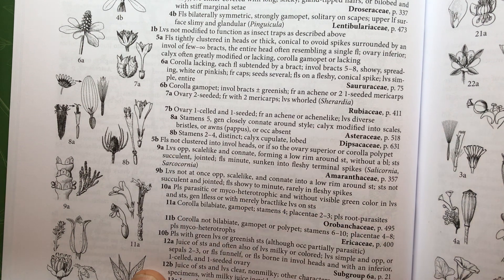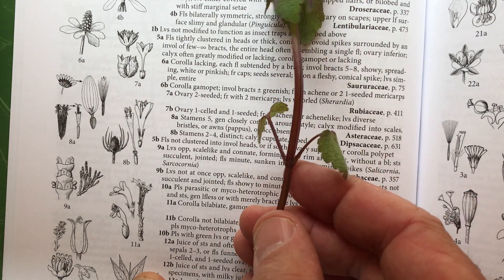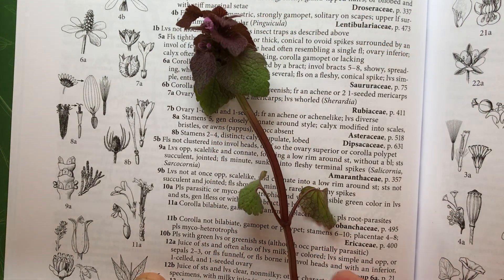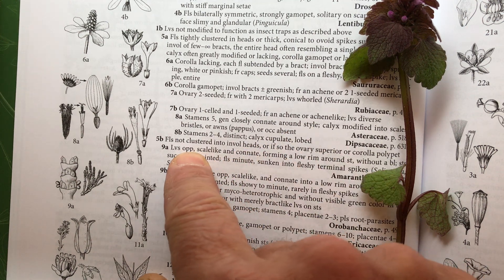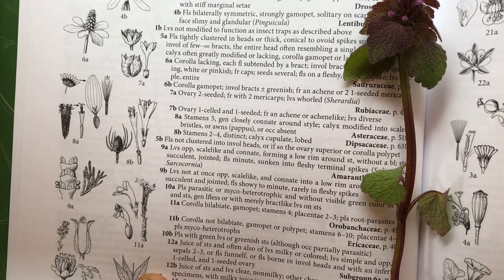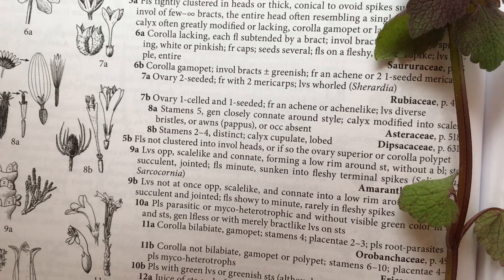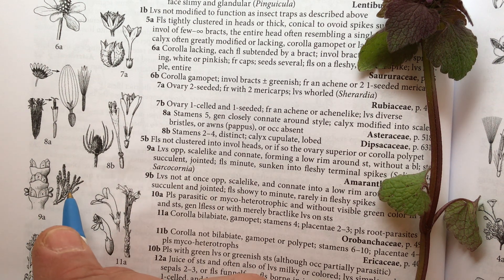9a: leaves opposite. Now if we just read part of the couplet, we would love this — you can see a beautiful illustration of opposite leaves coming off opposite each other on the stem, at the top, the bottom, and the middle. It's a beautiful opposite-leaf plant, but we have to read the whole couplet, especially past a comma. The full couplet reads: leaves opposite, scale-like and connate — meaning fused — forming a low rim around the stem. That is not what we're looking at. That's something like in the Amaranthaceae, and you can see in 9a an example of what we're talking about there.